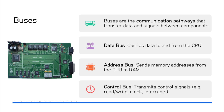The address bus transmits the address to be read from or written to in memory. Its width determines the memory capacity of the system — for example a 32-bit address bus can access 2^32 memory locations. So a 4 GB RAM chip could have all addresses accessed in one cycle, but an 8 GB one would need two cycles or a motherboard with a bigger bus. The data bus is a bi-directional bus — it can transmit data in both directions. The address bus is a unidirectional bus — it can only transmit addresses to RAM, not receive addresses from RAM.